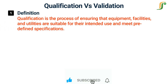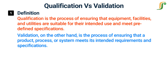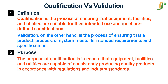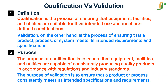Qualification is the process of ensuring that equipment, facilities, and utilities are suitable for their intended use and meet predefined specifications. Validation, on the other hand, is the process of ensuring that a product, process, or system meets its intended requirements and specifications. The purpose of qualification is to ensure that equipment, facilities, and utilities are capable of consistently producing quality products in accordance with regulations and industry standards. The purpose of validation is to ensure that a product or process consistently meets its intended specifications and requirements.